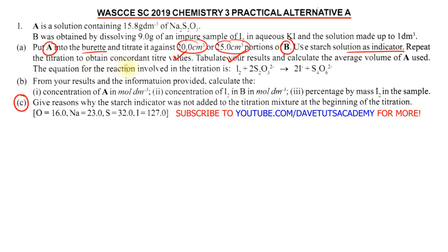We are to repeat the titration to obtain concordant titre values — we don't carry it out in a single step. We will have a rough, a first reading, and a second reading. Then we tabulate the results and calculate the average volume of A using the concordant values. We are given the equation of the titration which will help our calculation.